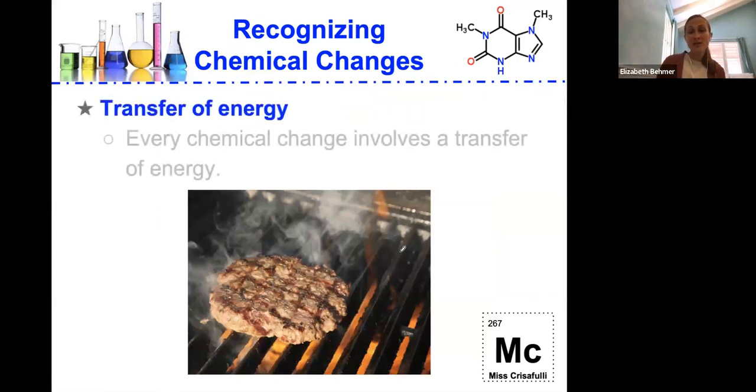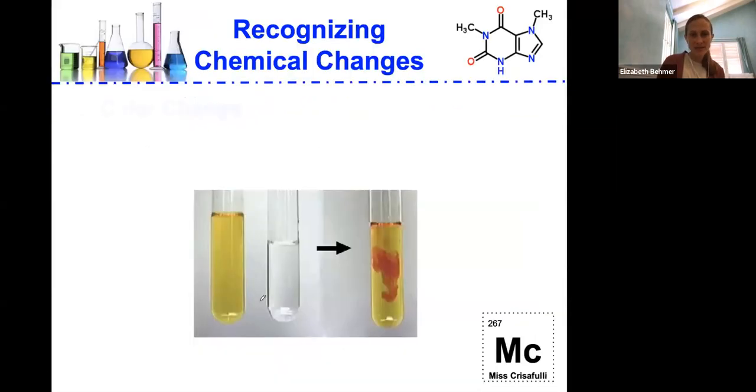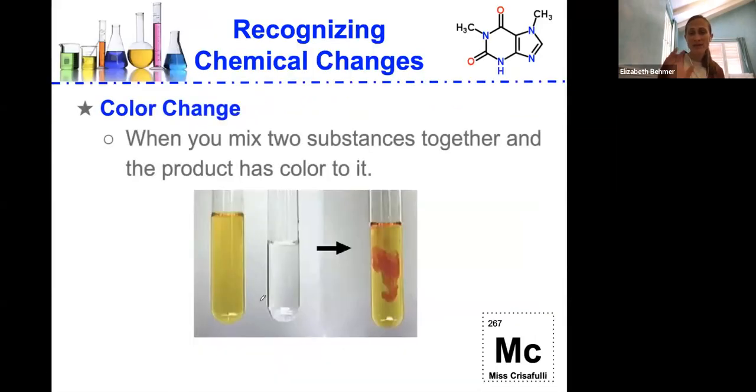The transfer of energy is when every chemical change involves some sort of transfer of energy. For example, heat as a transfer of energy, you know, grilling this meat, this piece of meat, a color change when you mix two substances together and the product has a different color to it. That would be example of a chemical change.